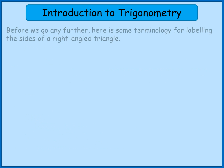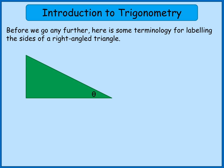We're going to get some terminology sorted because there's a particular way of labelling the sides of a right-angled triangle when we're doing trigonometry. You can see on one of the angles there's what looks like a zero with a line through it — that's the Greek letter theta. It's used in trigonometry to label a missing angle, so this might be an angle that we're trying to calculate.